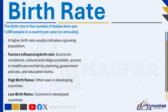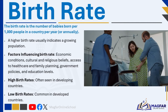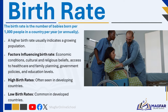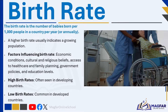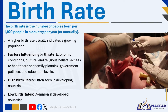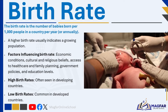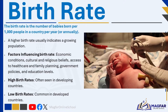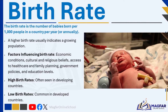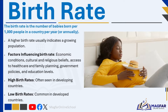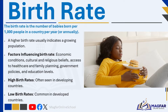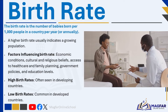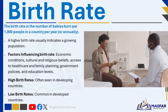The birth rate is the number of babies born per 1,000 people in a country per year. A birth rate of 20 means there are 20 live births per 1,000 people per year. A higher birth rate usually indicates a growing population. Factors influencing birth rates include economic conditions, cultural and religious beliefs, access to health care and family planning, government policies, and education levels. High birth rates are often seen in developing countries where access to contraception may be limited and cultural norms favor larger families.